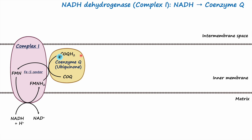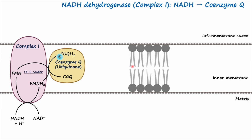Coenzyme Q is also known as ubiquinone. Importantly, coenzyme Q is a mobile electron carrier — it moves to Complex 1, picks up electrons, and then transfers them to the next member of the electron transport chain. Electrons have a negative charge and cannot move along the inner membrane on their own, because the membrane is made of phospholipids whose non-polar tails do not interact well with negatively charged electrons. Therefore coenzyme Q, a mobile electron carrier embedded in the inner membrane, is essential.